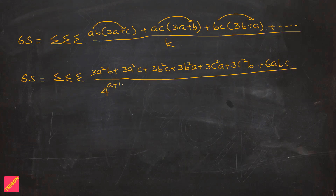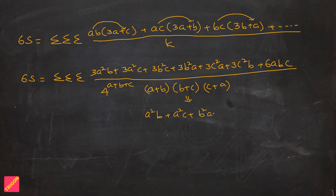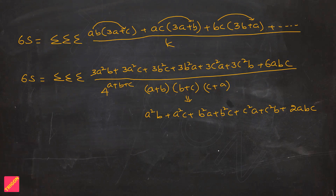The denominator k is 4^(a+b+c) multiplied by (a+b)(b+c)(c+a). Expanding (a+b)(b+c)(c+a) gives a²b + a²c + b²a + b²c + c²a + c²b + 2abc. Comparing this with our numerator — which is 3 times the same expression (a²b + a²c + b²a + b²c + c²a + c²b + 2abc) — the two cancel, leaving just a factor of 3 in the numerator.